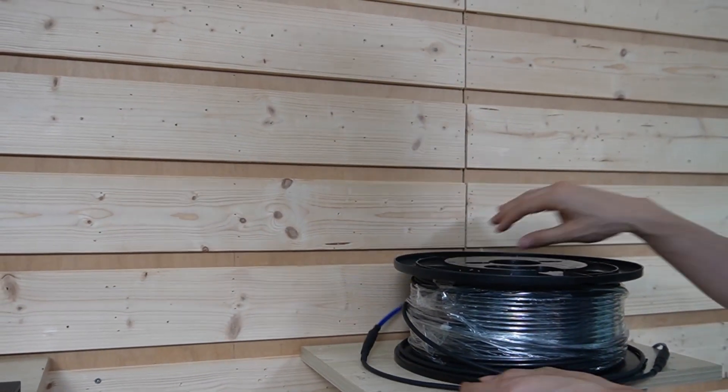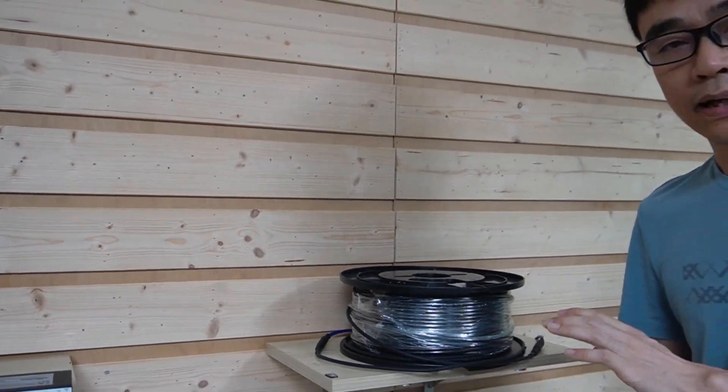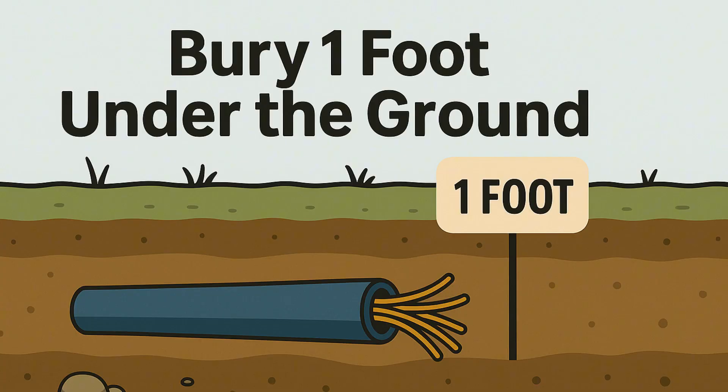There's one more tip about buried fiber optic cable: it's better to bury the cable at least one foot below ground to avoid heavy vehicles or heavy machinery crushing the cable.